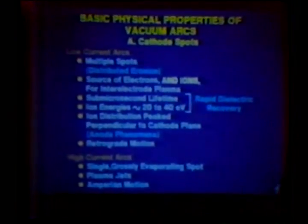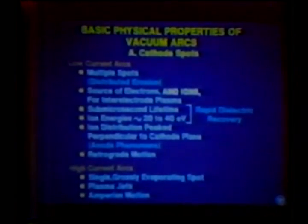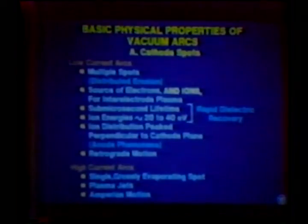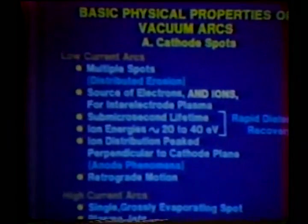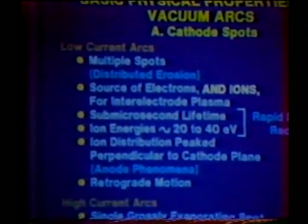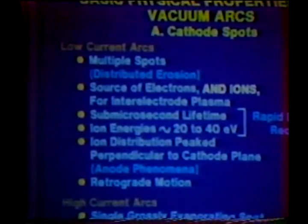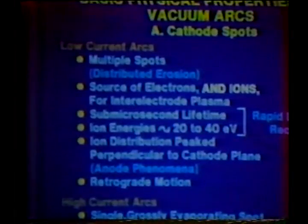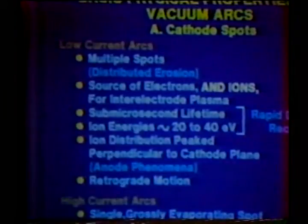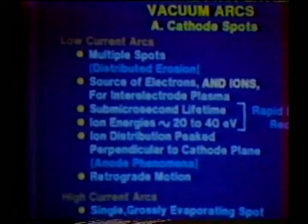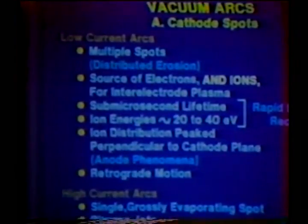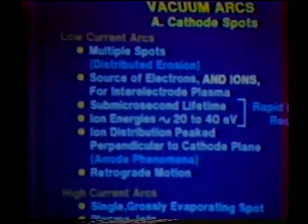In low current arcs we have multiple cathode spots, which is an attractive feature for a vacuum interrupter because you get distributed erosion. Those spots are the source not only of electrons but also of ions for the inter-electrode plasma. The spots have a sub-microsecond lifetime, as discussed at length yesterday by Professor Mesyats. The ion energies moving away from these cathode spots are of the order of 20 to 40 eV. These fundamentally unstable cathode spots and their high ion energies are both factors associated with rapid dielectric recovery. This translates to an ion — or gross plasma motion — of the order of 10 to 60 cm per second. The ion distribution is peaked perpendicular to the cathode plane, and cathode spots in the presence of a transverse magnetic field move in retrograde motion.